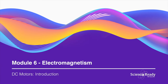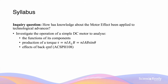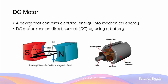Hey everyone, this video is on DC motors. A DC motor is a device that converts electrical energy in the form of current into mechanical energy. There are many types of motors that can convert electrical energy into mechanical energy.